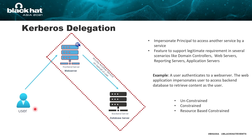Consider a simple environment where a user accesses a web server and the web server pulls data from a backend database server. When delegation is configured, the web server can mimic and impersonate the user, using the exact permissions the user has over the database server to access it on the user's behalf. In the case of unconstrained delegation, when a user connects to the web server, the TGT of the user is placed on the web server. If an attacker can gain administrative access to the web server, they can steal the TGT and impersonate the user to access any resource in the Active Directory environment. Unconstrained delegation is vulnerable and should not be used; many organizations are moving to constrained delegation and resource-based constrained delegation.